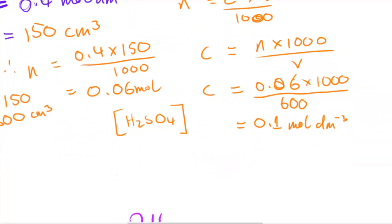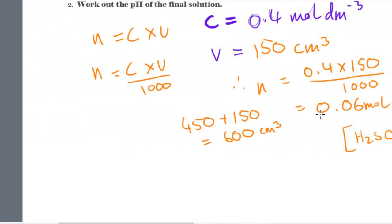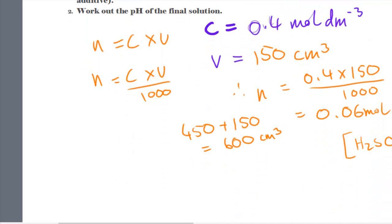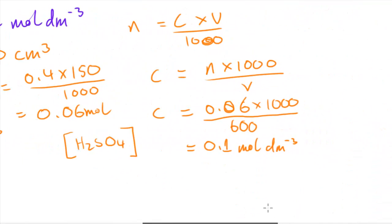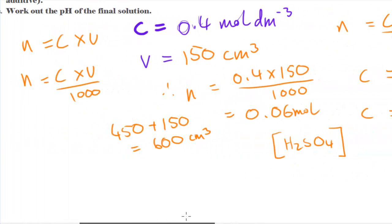The answer to the first part is that the molarity is 0.1 moles per dm³, or using the molar notation, 0.1 M, where M represents moles per dm³. Now the question asks us to work out the pH of the final solution.